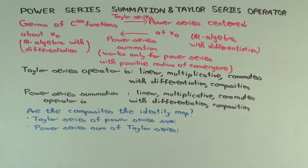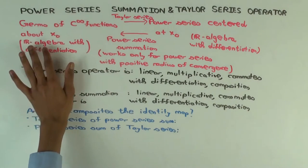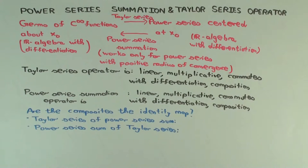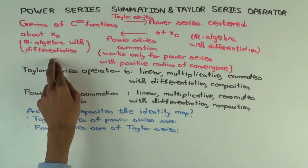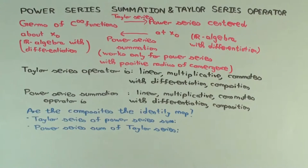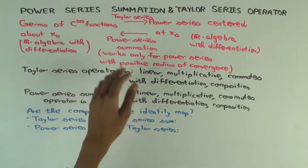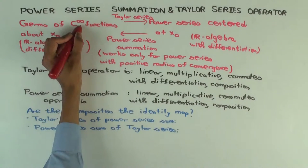Just as you can add, subtract, and multiply functions to get new functions — f plus g is the function sending x to f(x) plus g(x) — you can do the same for germs of functions. This structure is an algebra over the reals. It also has a differentiation operation: given a germ of a C∞ function about x₀, you can determine its derivative, and two functions with the same germ will have derivatives with the same germ. C∞ clinically means infinitely differentiable.